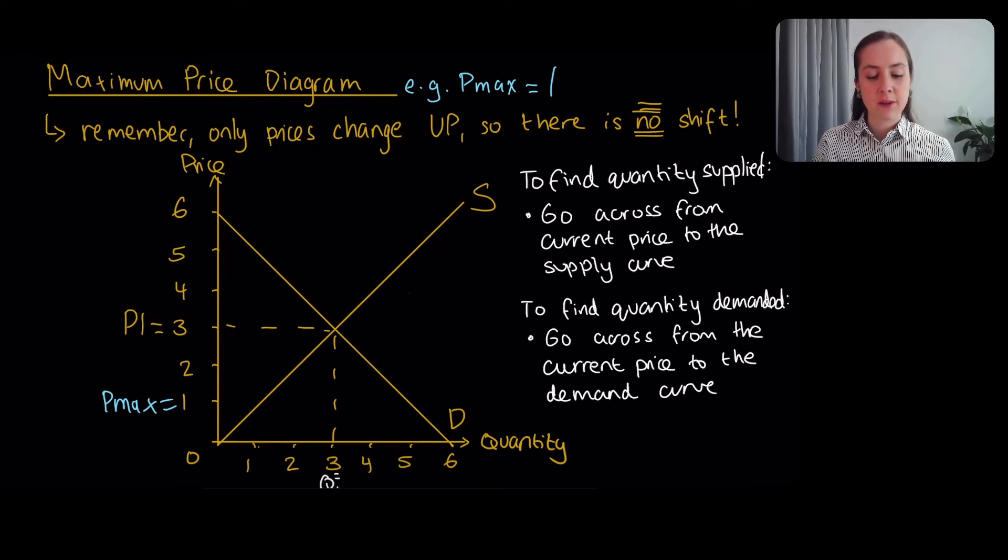A maximum price graph, remember it has to be set below the equilibrium price. And right now the equilibrium price is 3. And here I decided to use, we'll set a price of 1. That's the new maximum price. And I'm just going to draw some sketch lines to illustrate that's the maximum price. Some people draw solid lines. I prefer drawing sketch lines because there's no curve here, I'm just illustrating that that's kind of where the legal requirement is.